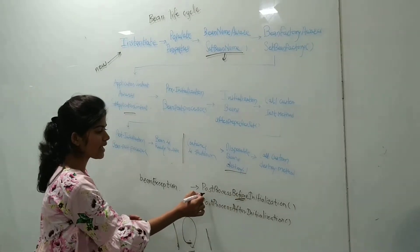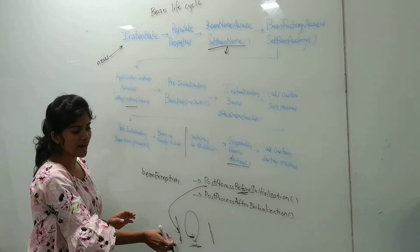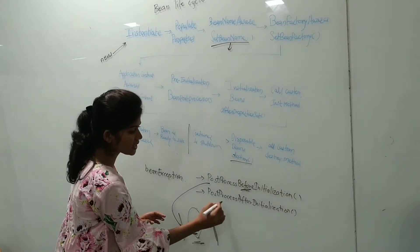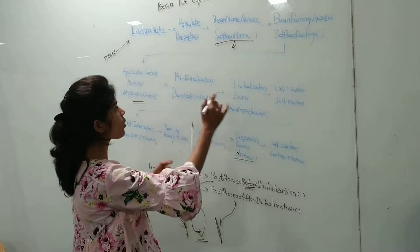When before is there, this method is being implemented and overridden. And whenever it is after, then it is post-process after initialization.